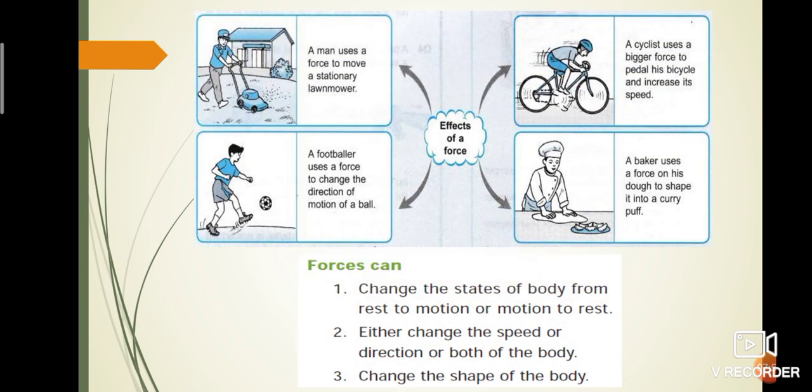We can see effects of a force. Shall we discuss some examples? A man uses a force to move a stationary lawn mower. A footballer uses a force to change the direction of motion of a ball. A cyclist uses a bigger force to pedal his bicycle and increase its speed. A baker uses a force on his dough to shape it into a curry puff. So, force can change the states of body from rest to motion or motion to rest. It also changes the speed or direction of body. Force can also change the shape of the body.